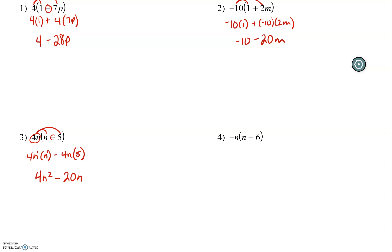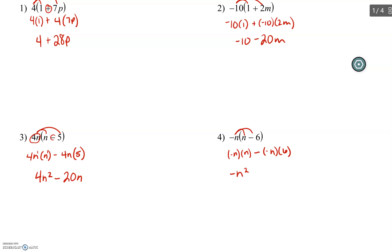Number 4. Negative n is what we are distributing. So we have negative n times n — there's a subtraction sign — negative n times 6. Notice I did not lose the negative or subtraction sign. Negative n times n would be negative n squared, and negative n times 6 would be negative 6n. You can leave your answer like that, or remember, negatives are addition of the opposite, so that would be plus positive 6n. n squared and n are not like terms, so we cannot combine them.